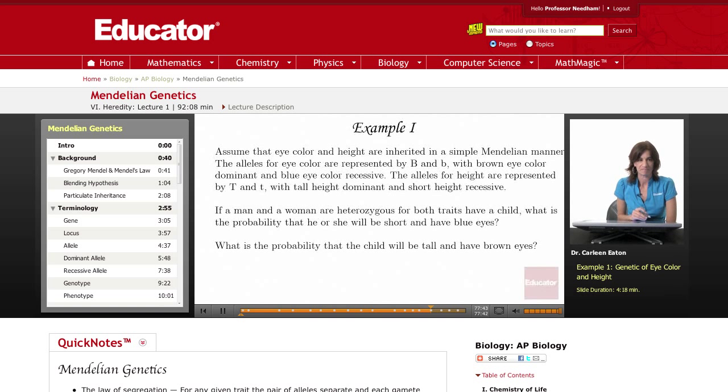Starting with example one. Assume that eye color and height are inherited in a simple Mendelian manner. The alleles for eye color are represented by big B and little b with brown eye color dominant.